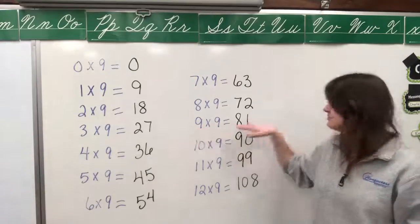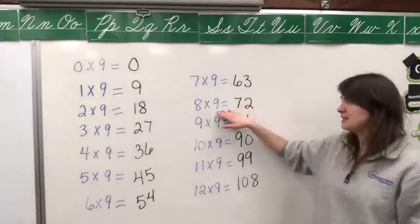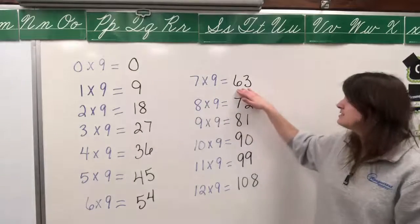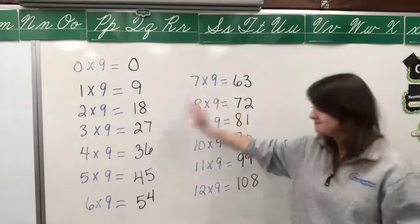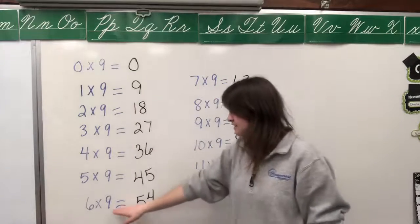Sixty-three divided by nine equals seven. Fifty-four divided by nine equals six.